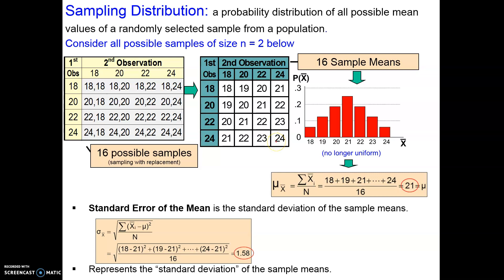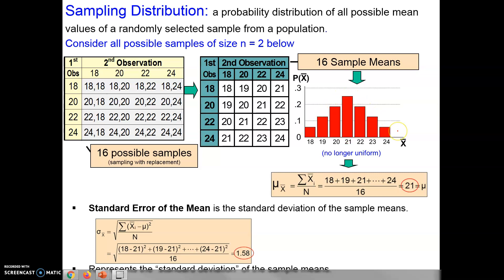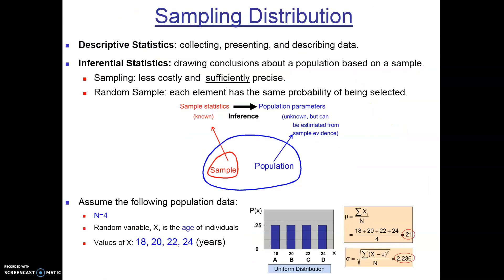From there we construct the sample mean distribution — that is, what is the probability of getting a sample with a particular mean? Out of 16 samples, the probability of a mean of 18 is 1 out of 16, a mean of 19 is 2 out of 16, a mean of 20 is 3 out of 16, and so on. If you do this, you'll find the distribution of sample means is actually normal, even though the population we pulled from was uniform.